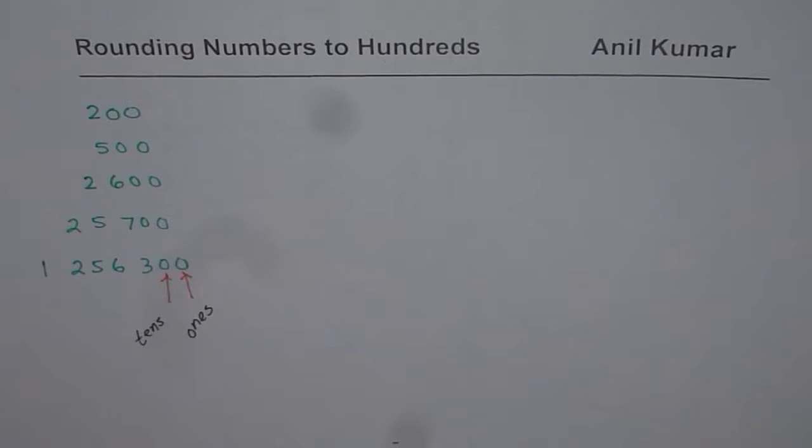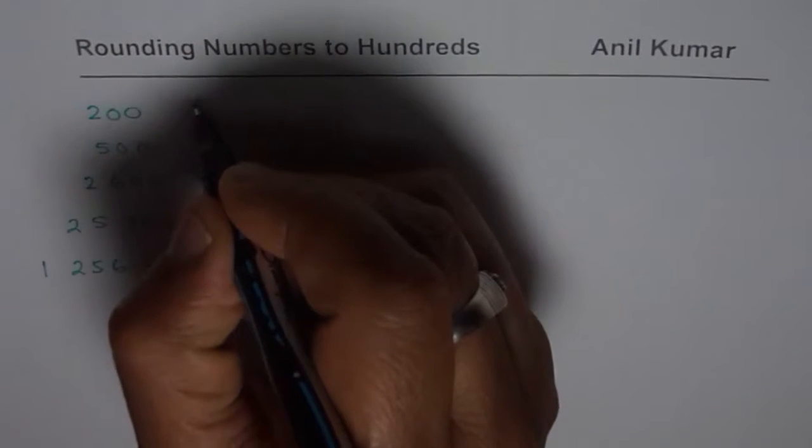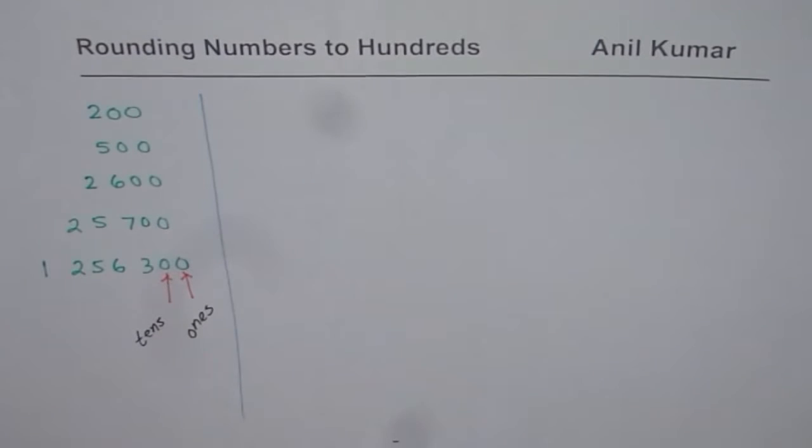Ones and tens position should definitely have zeros. So after rounding to hundreds, we know what our result should be. Now we will see how to round numbers to hundreds.